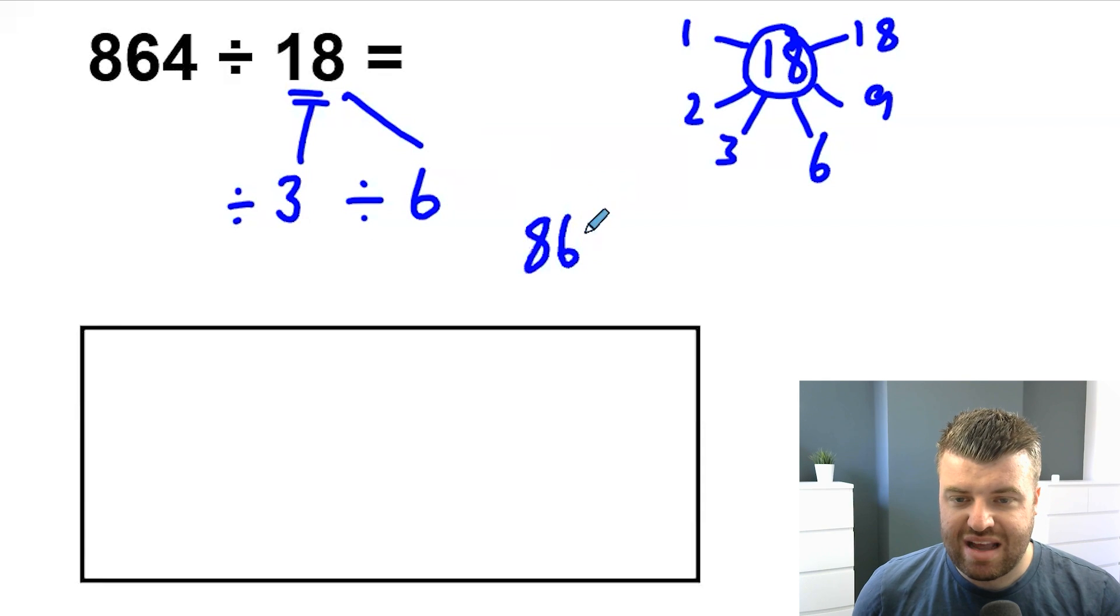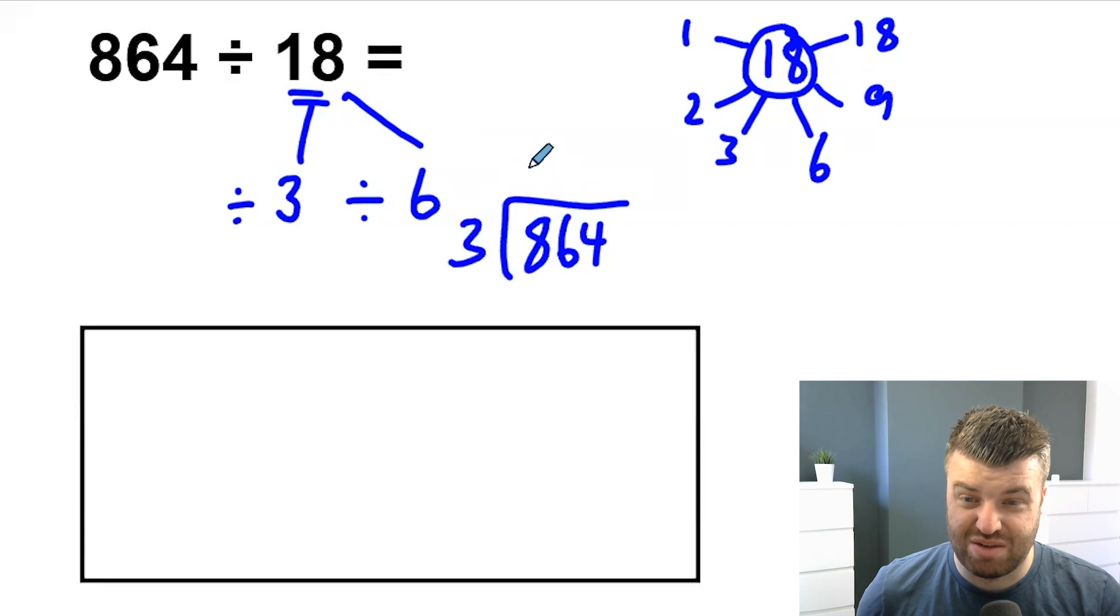Once we've done this, actually our answer should be quite simple. We know our 3 times table goes in twice, exchange over 2. 3s into 26 is 8 with 2 left over. 3s into 24 is 8.